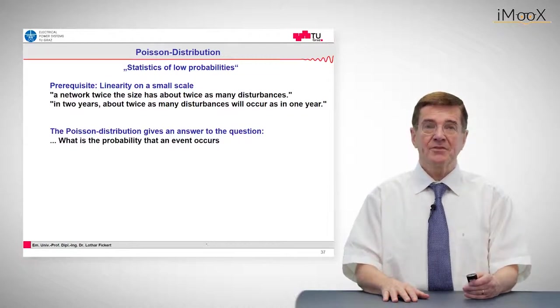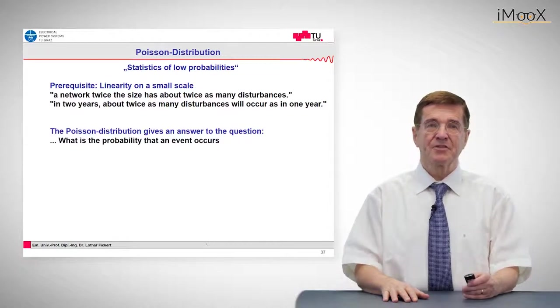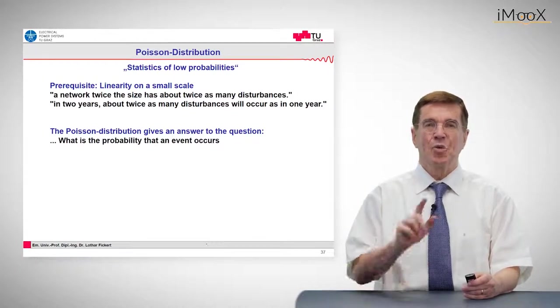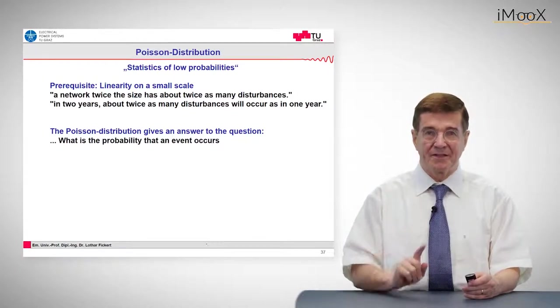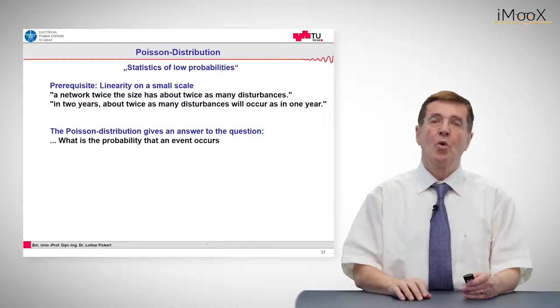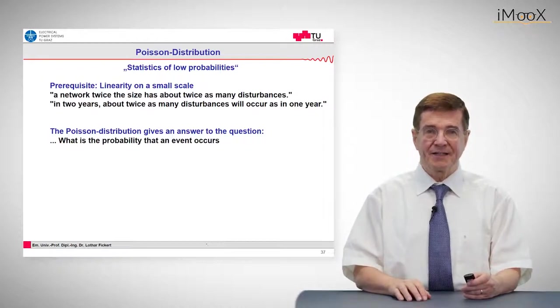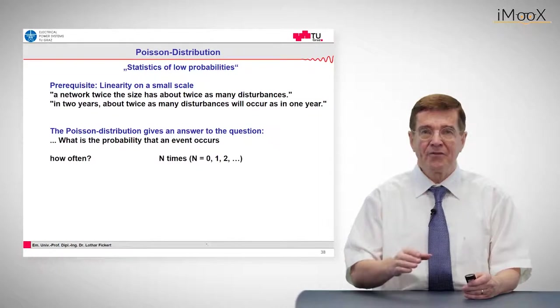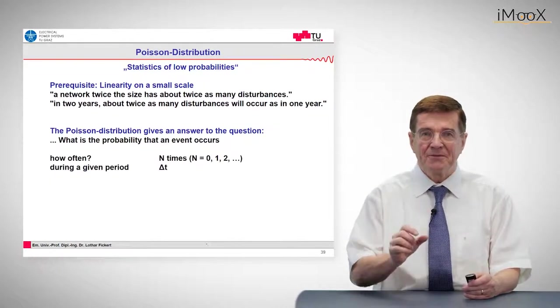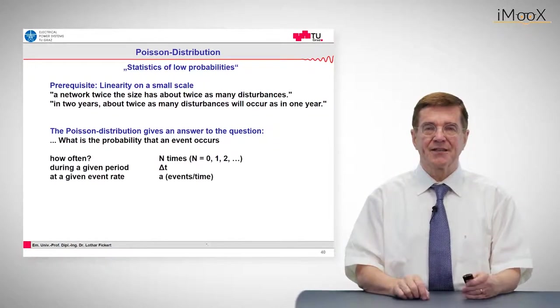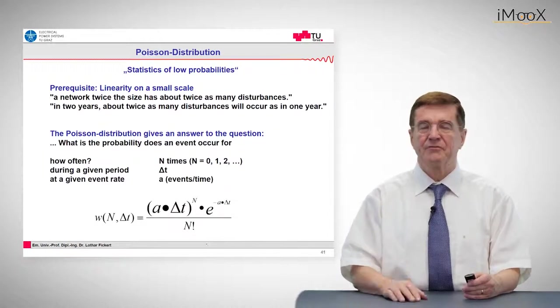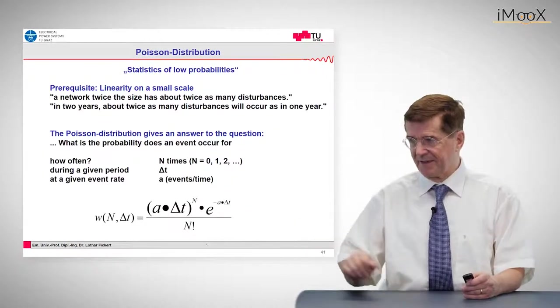The Poisson distribution gives the answer to the question: what is the probability that an event occurs how often during which period at the given event rate? And then there is a formula which can be seen here.